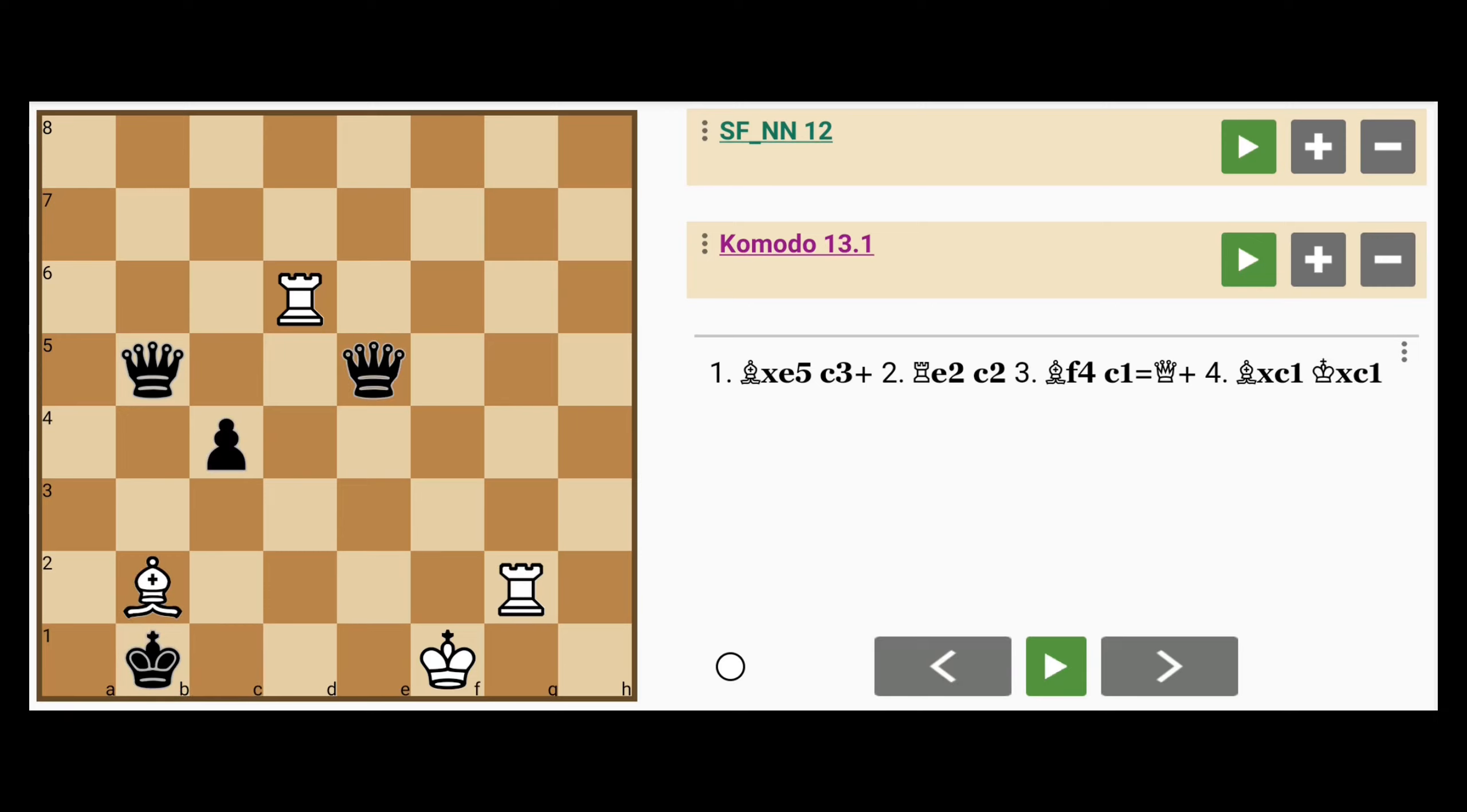And of course, if white were to try rook on the d file to d2, defending the bishop on b2 and also moving that rook out of harm's way, this would be a mistake.